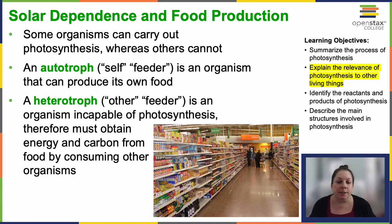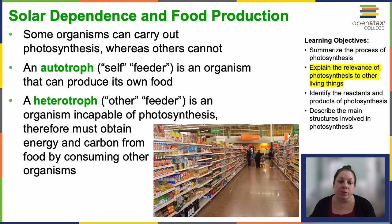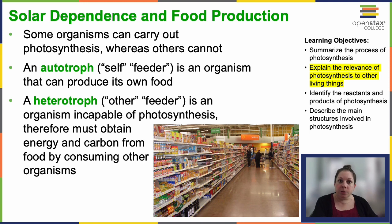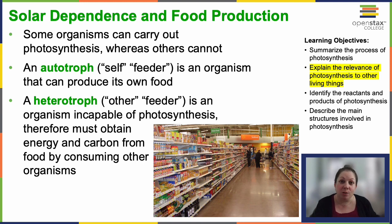A nice example: deer and wolves are both heterotrophs. Deer obtain energy by consuming plants, while wolves eat the deer. The wolf doesn't eat all of the deer, so what's left decomposes back into the soil, which nourishes and fertilizes it and allows new grass to grow. So it just keeps going around and around.